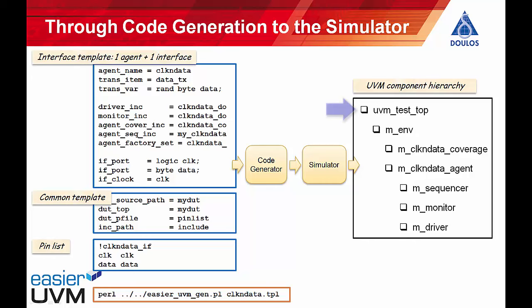At the top of the UVM component hierarchy we have a component named UVM test top, which is a UVM test. The test instantiates a UVM env, which in turn instantiates a coverage component and an agent, and then finally the agent instantiates sequencer, driver and monitor. Let's take a look at the kinds of things generated by the easier UVM code generator because that's conceptually important not only in understanding how the code generator works but in understanding how UVM itself works.